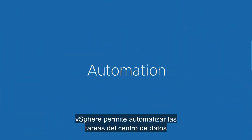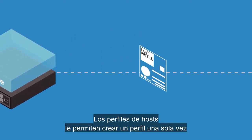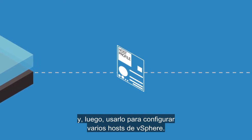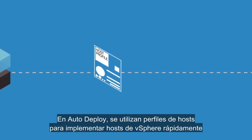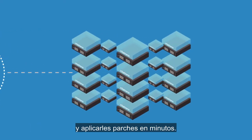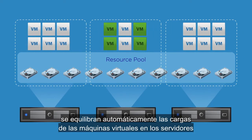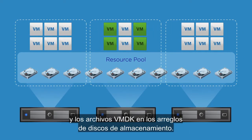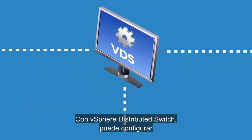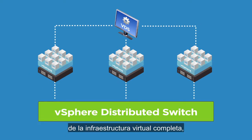vSphere automates data center tasks to improve efficiency and utilization. Host Profiles lets you create a profile once and then use it to configure multiple vSphere hosts. Auto Deploy utilizes host profiles to rapidly deploy and patch vSphere hosts in minutes. Distributed Resource Scheduler automatically load balances virtual machines across servers and VMDK files across storage arrays. With vSphere Distributed Switch, you can centrally configure and manage all your virtual switches across your entire virtual infrastructure, saving you time and frustration.